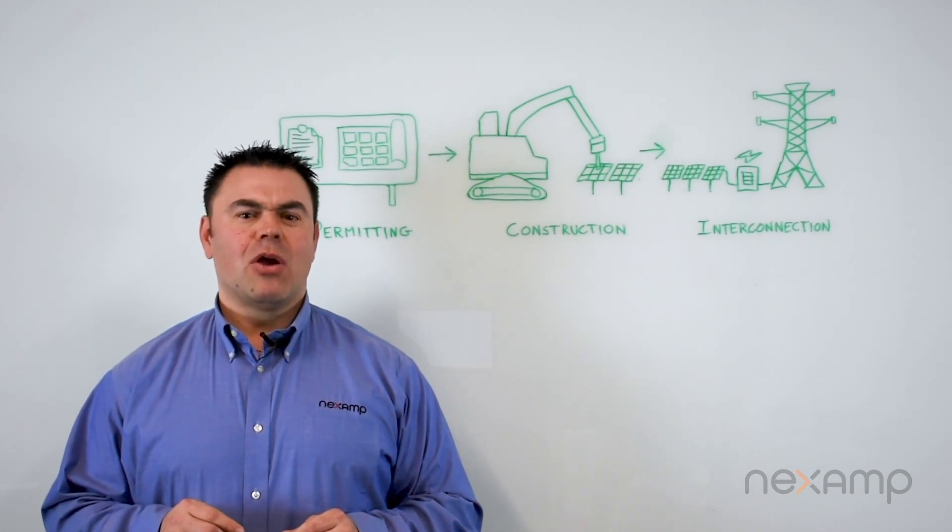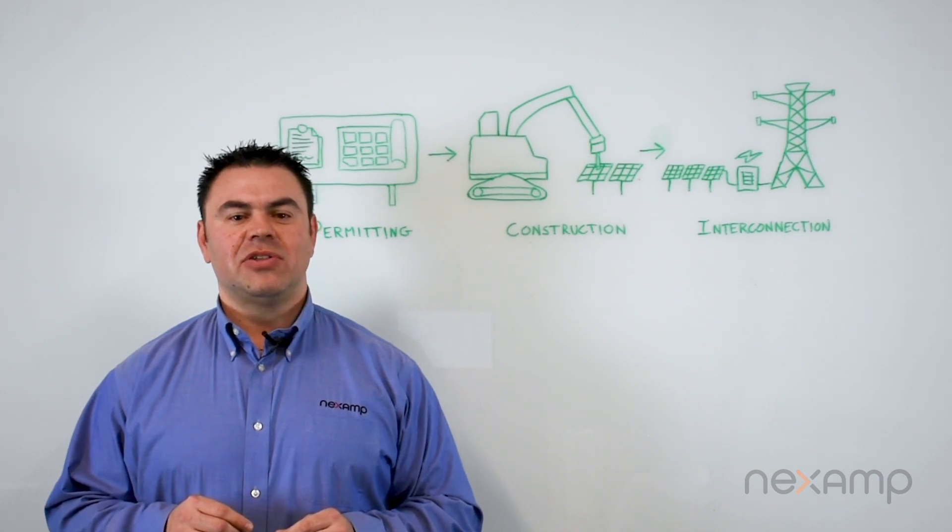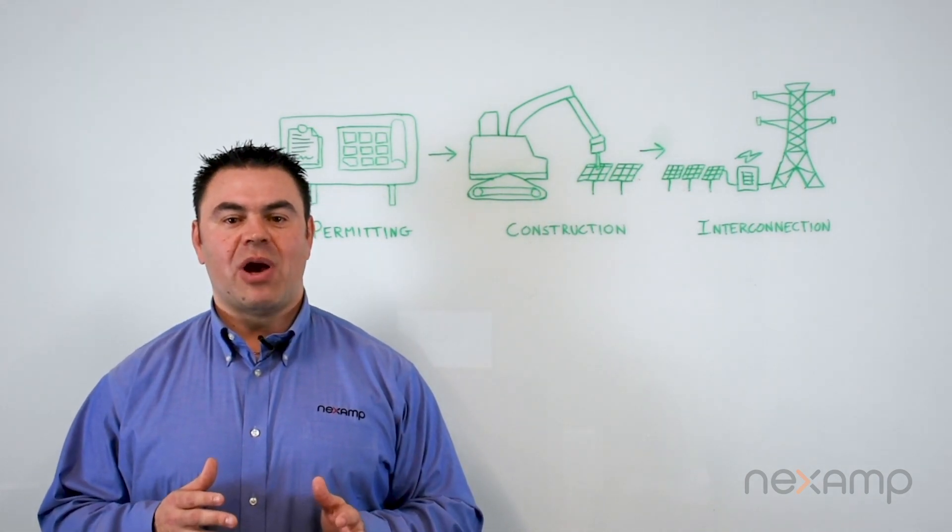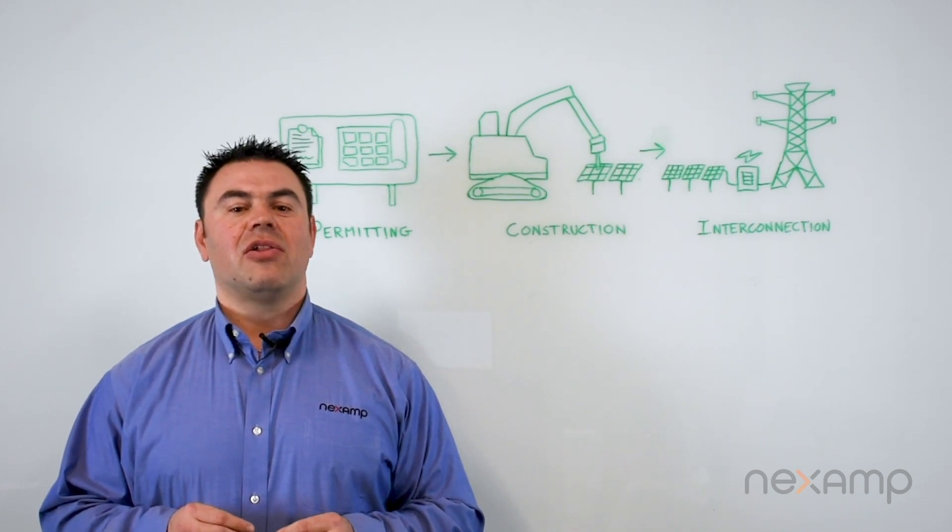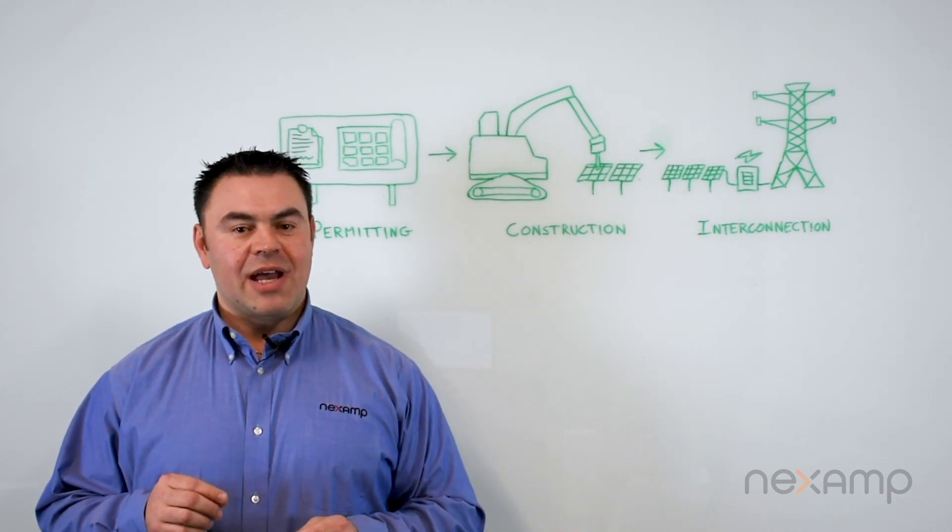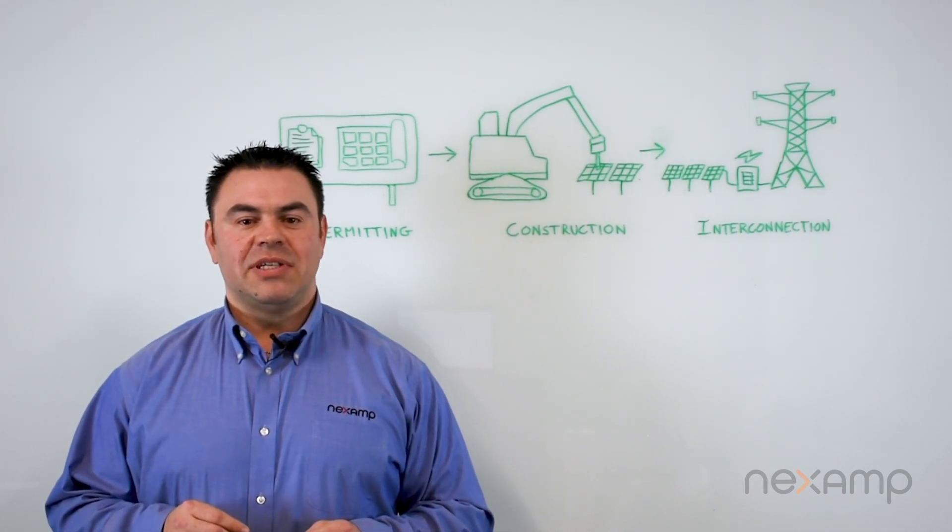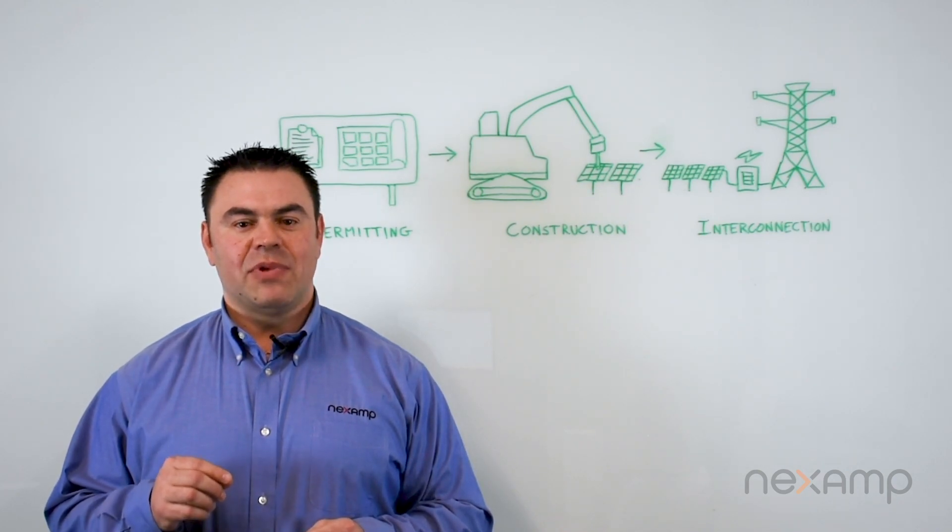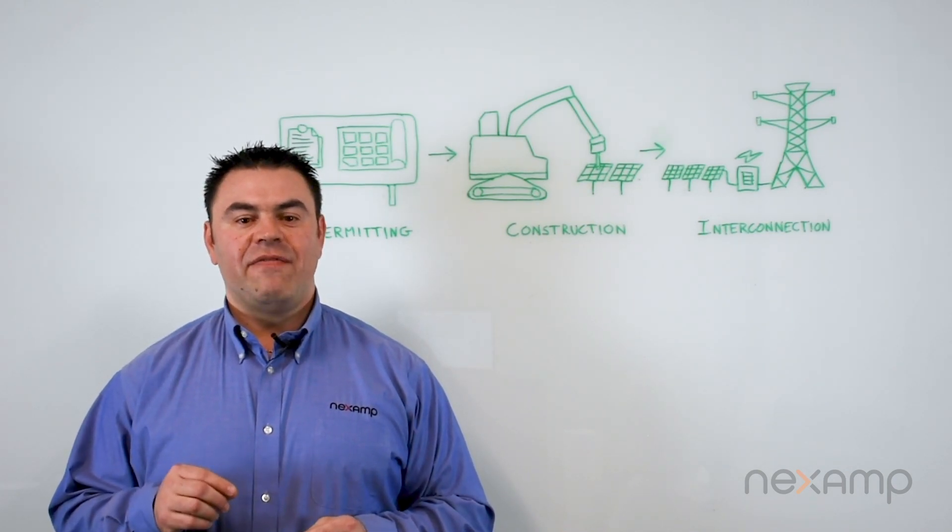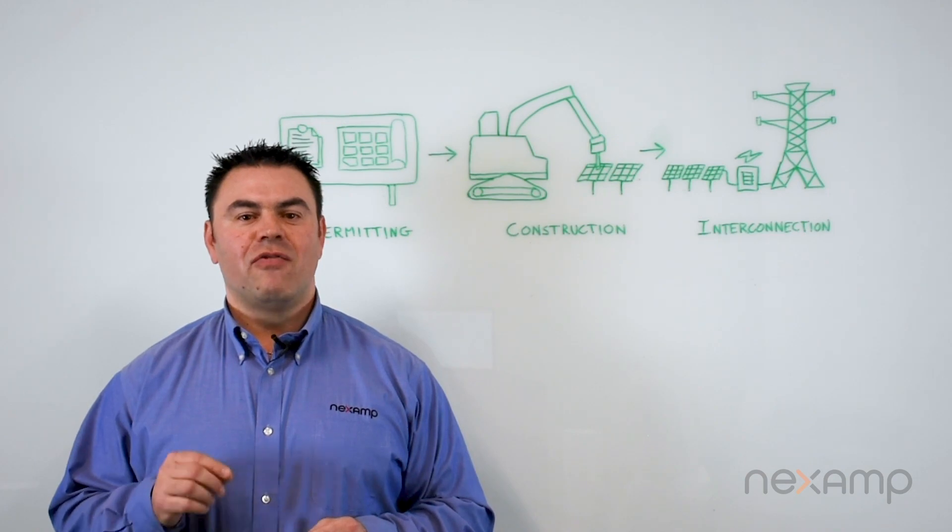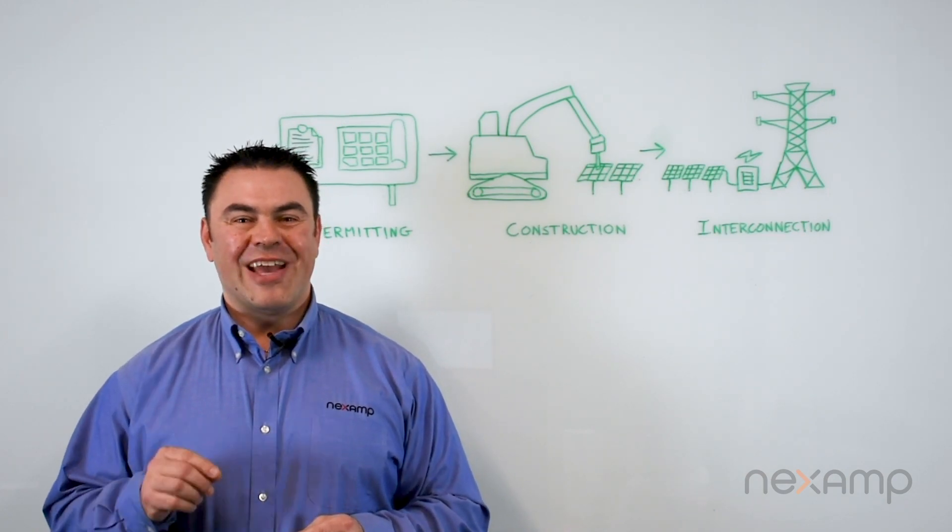At NEXAMP, we're committed to ensuring our community solar program is as smooth and hassle-free as possible. If you're interested in learning more about your project timeline, contact our support team at support@NEXAMP.com or call 855-727-4636. Thanks for watching.